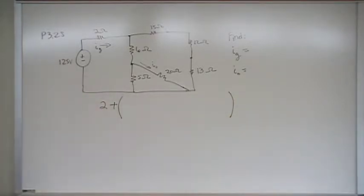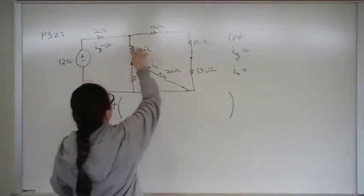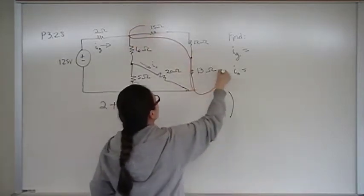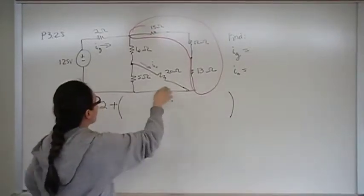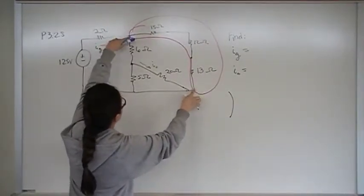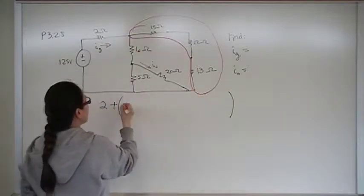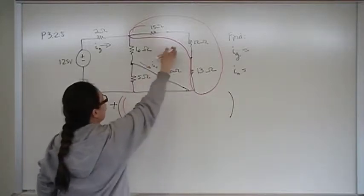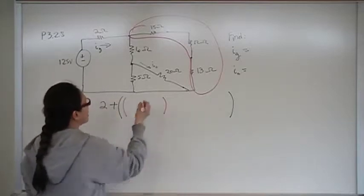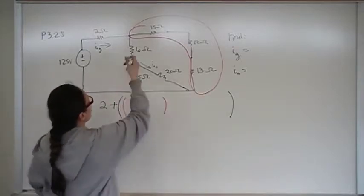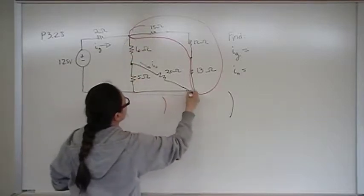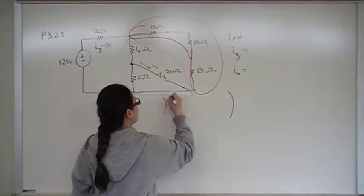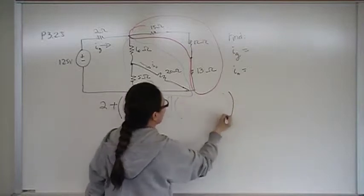We have this weird looking circuit. We know that this branch here is connected in parallel as a whole with this and this. So we know at the big level, at the highest layer, something is in parallel with what is in blue.